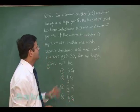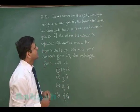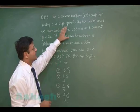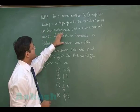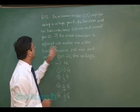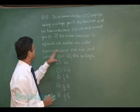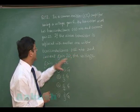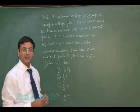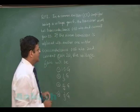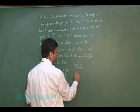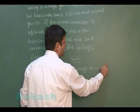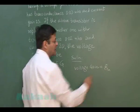Question 152 is from semiconductor electronics, based on transistors. A common emitter amplifier has voltage gain G. The transistor used has transconductance 0.03 mho and current gain 25. When the transistor is replaced with one having transconductance 0.02, the new voltage gain is demanded. The formula is: voltage gain = gm × load resistance.